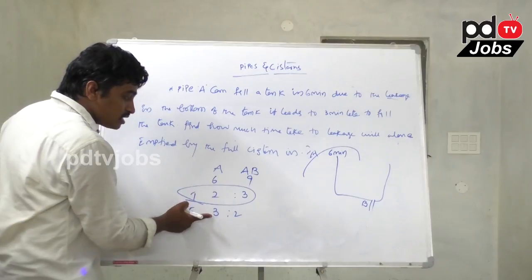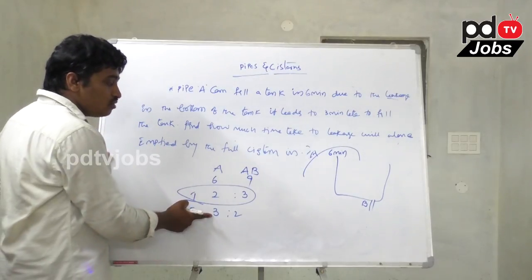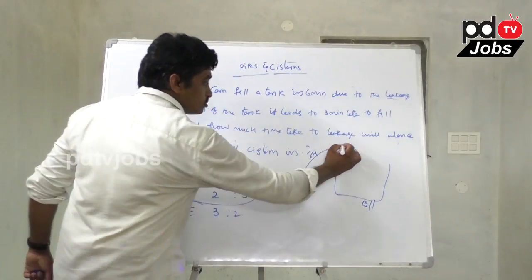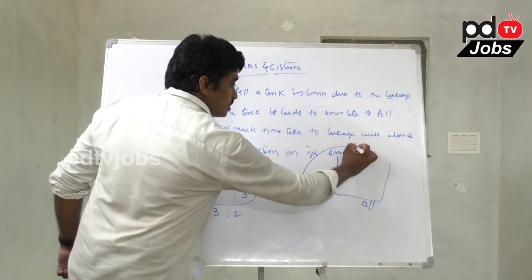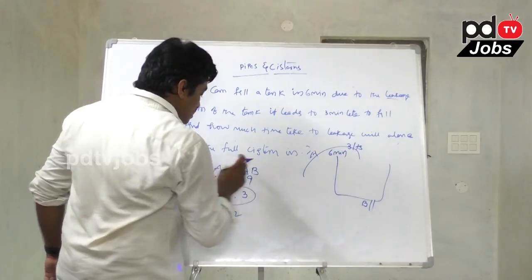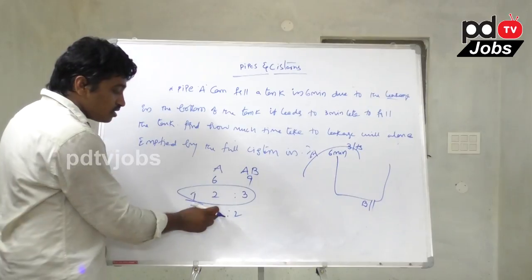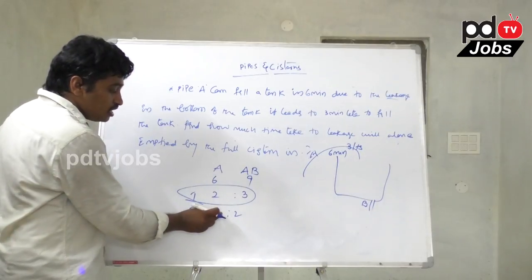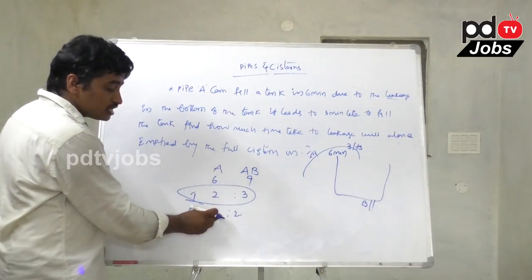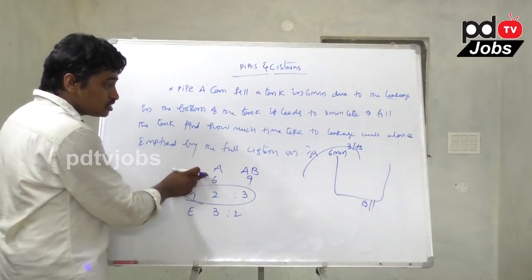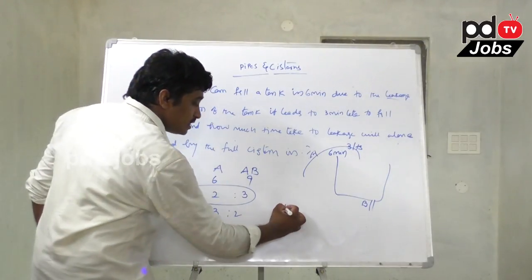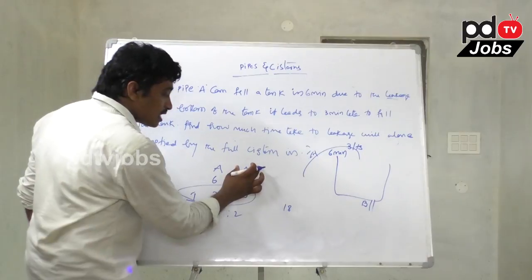Pipe A has an efficiency of three liters per minute. If A fills the tank in six minutes, the total tank capacity is 18 liters.